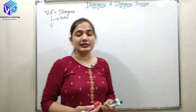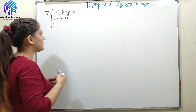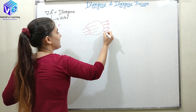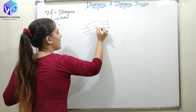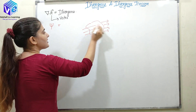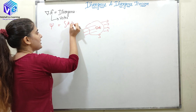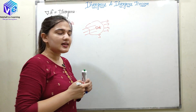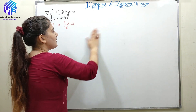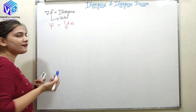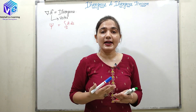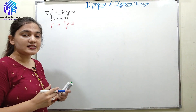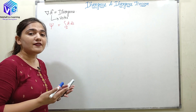Let me recall what flux is. Flux is the total number of field lines passing through an open surface S. For a small surface element dS, the field lines passing through it are given by A dot dS, and integrating over the entire surface gives the total flux. Divergence is defined as the net outward flux per unit volume around a given point.